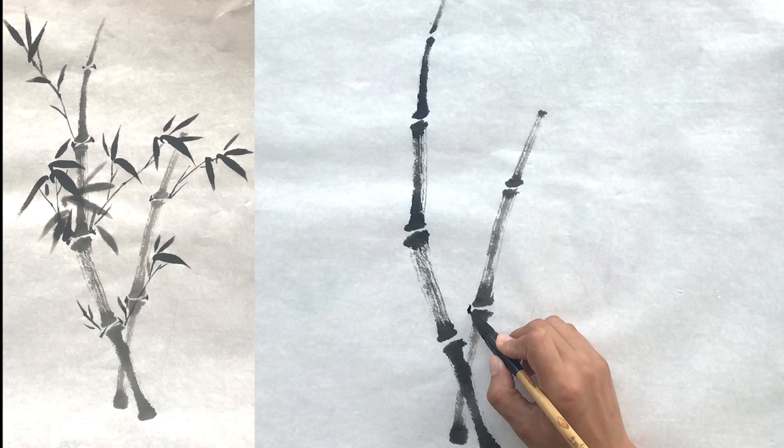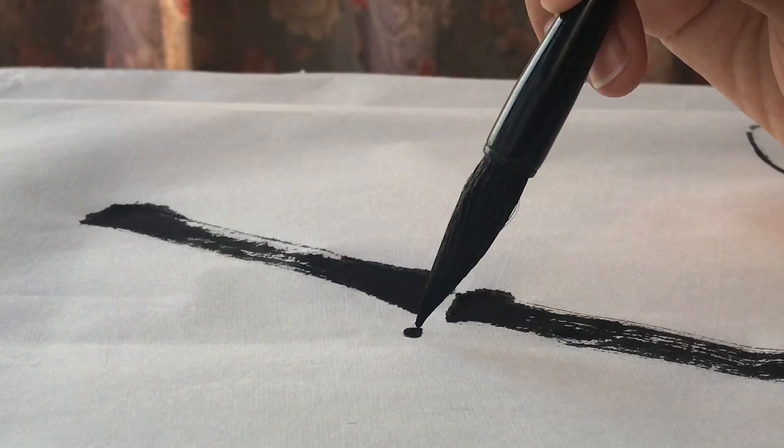Dip the brush into dark ink. Press the brush and sweep to the side to form a little triangle.